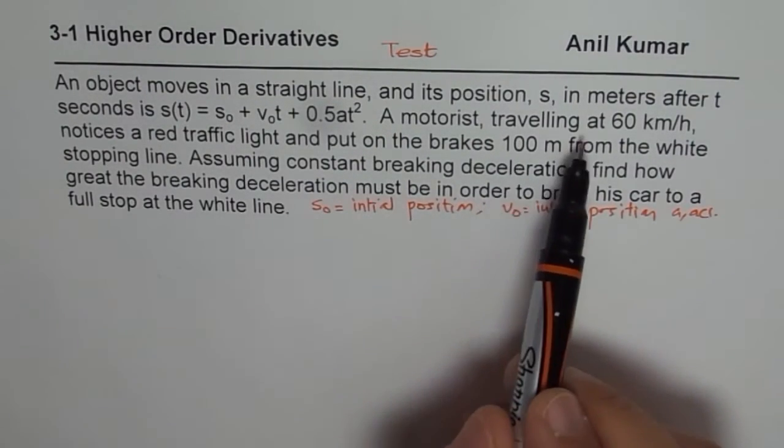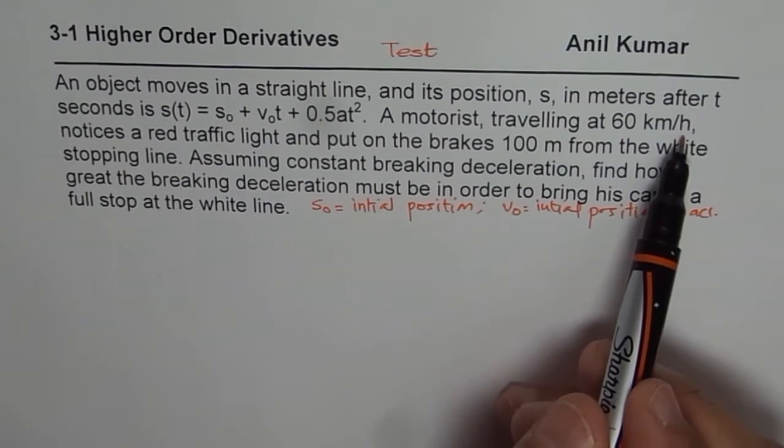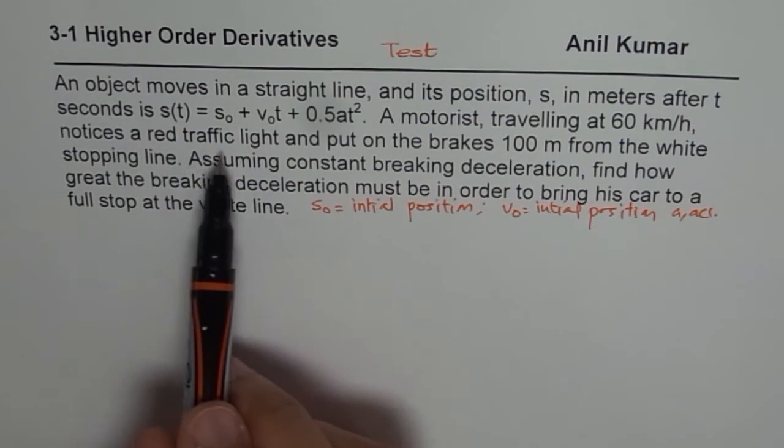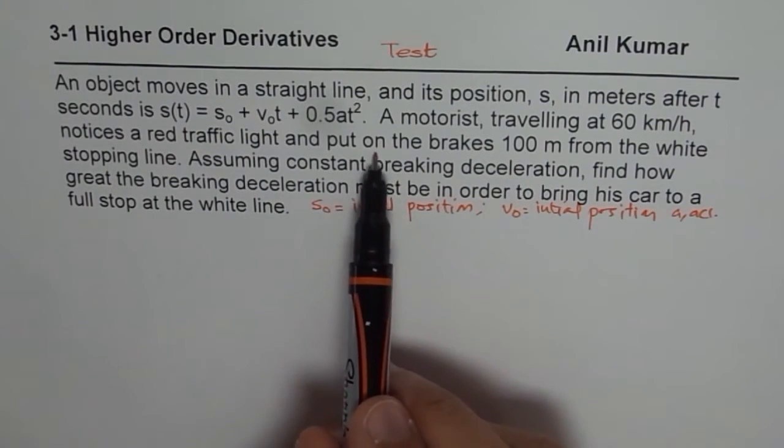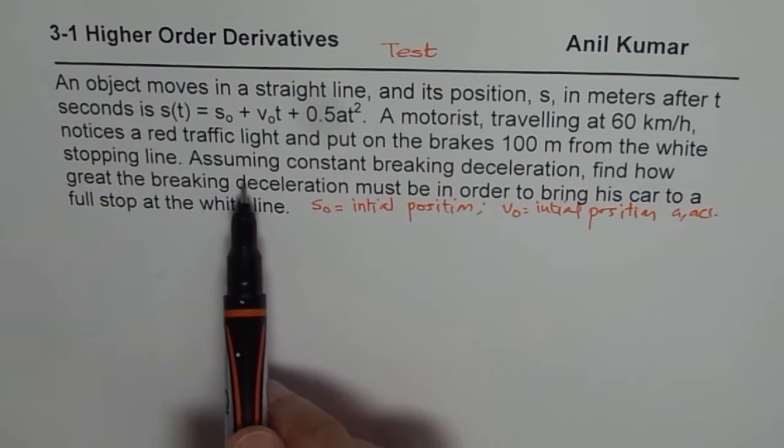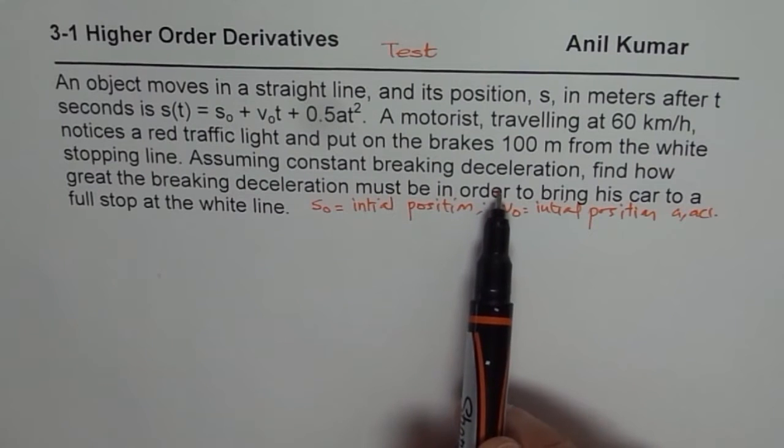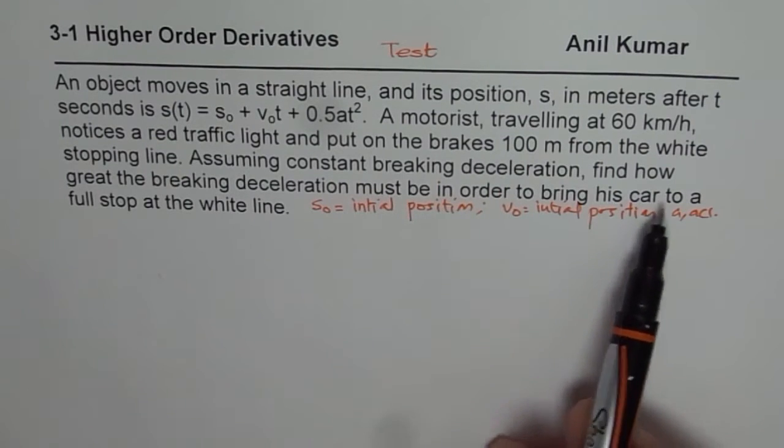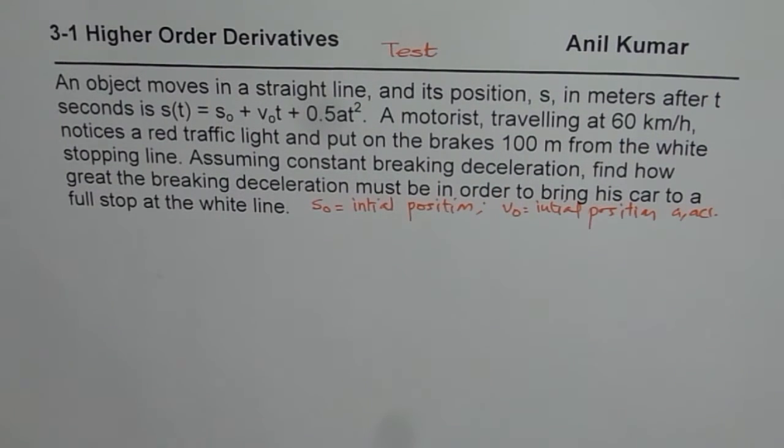A motorist traveling at 60 kilometers per hour notices a red traffic light and puts on the brakes 100 meters from the white stopping line. Assuming constant braking deceleration, find how great the braking deceleration must be in order to bring his car to a full stop at the white line. So that is the question.